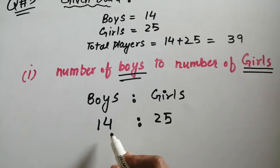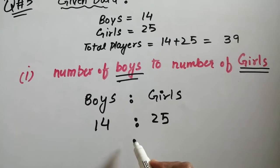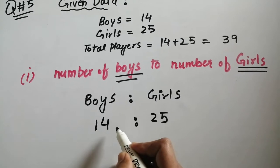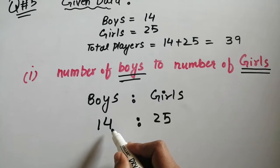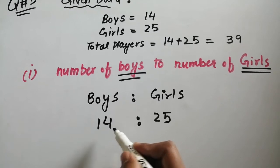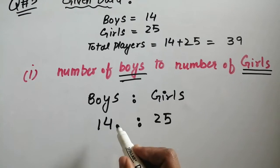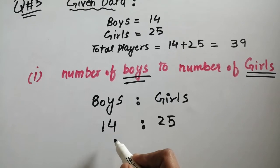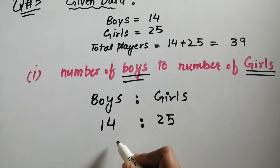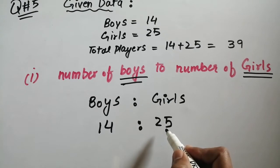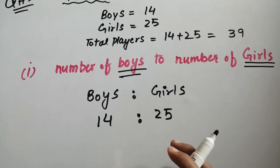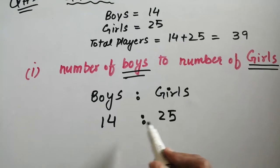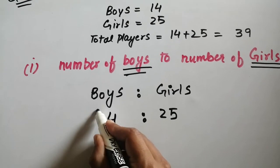If you look at 14, it divides by 2 and 7. But 25 will not divide by these. It means that no number can divide both, so this is your final answer.